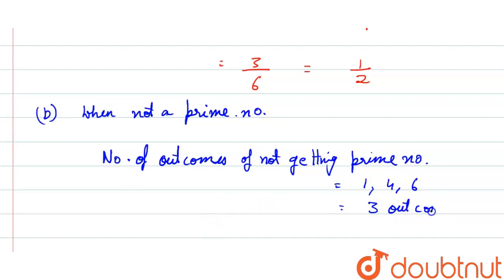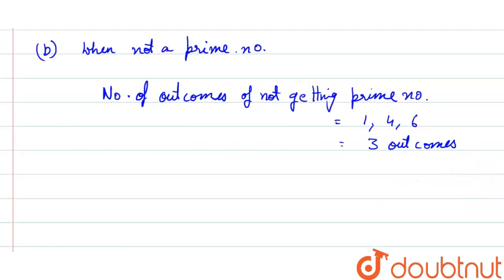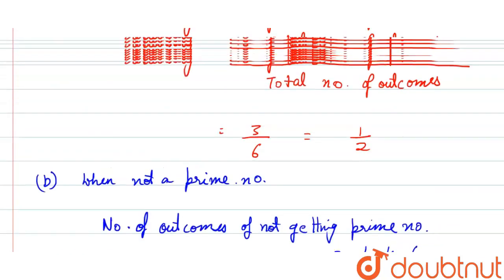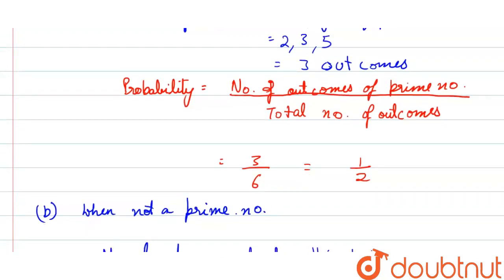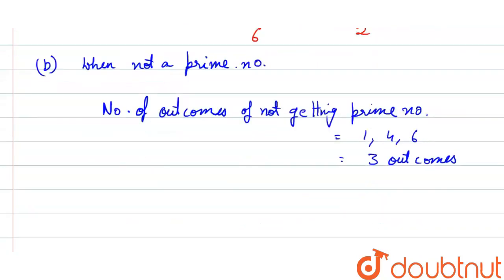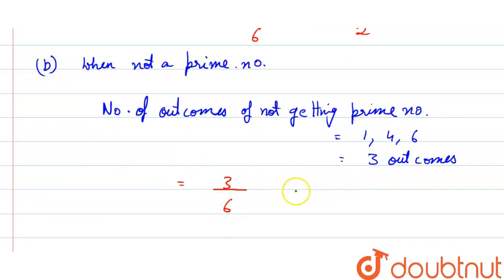Putting the values into the formula of probability: the number of outcomes of not getting a prime number is 3, divided by the total number of outcomes which is 6, giving us 1/2 again.